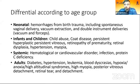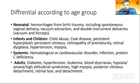Differential diagnosis can also be organized by age group. In neonates, hemorrhages from birth trauma including spontaneous vaginal delivery, vacuum extraction, and double instrument delivery can cause intraretinal hemorrhages. In children, causes include child abuse, Coats disease, persistent hyperplastic persistent vitreous, retinopathy of prematurity, retinal dysplasia, hypertension, myopia, systemic hematological or cardiovascular disorders, infection, and even vitamin C deficiency.